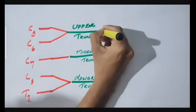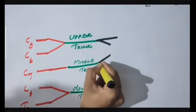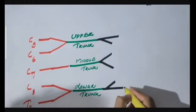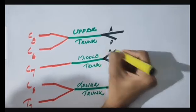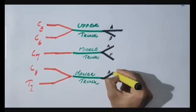Each trunk then splits into anterior and posterior divisions. Now, there are six divisions.